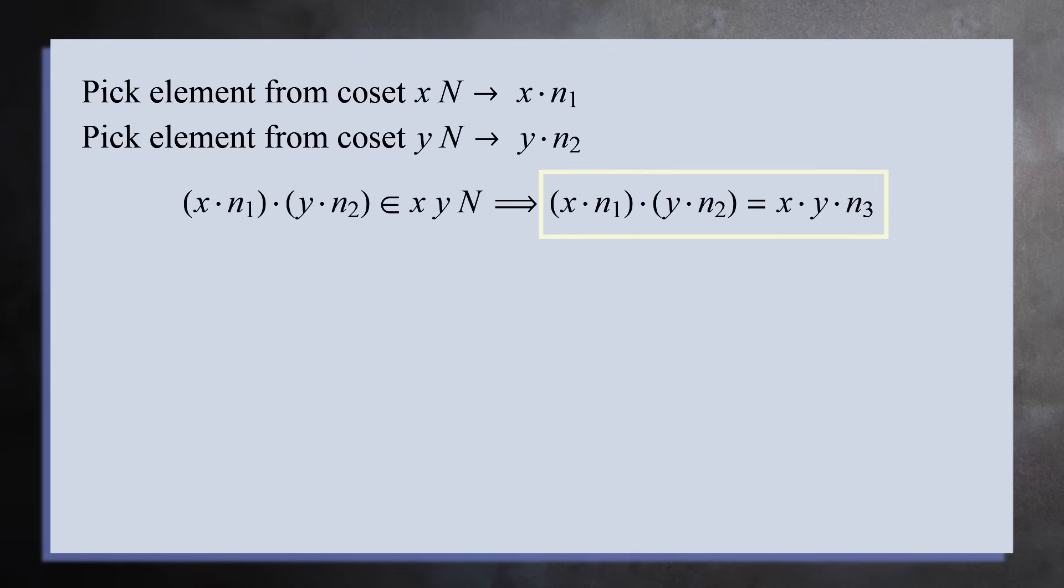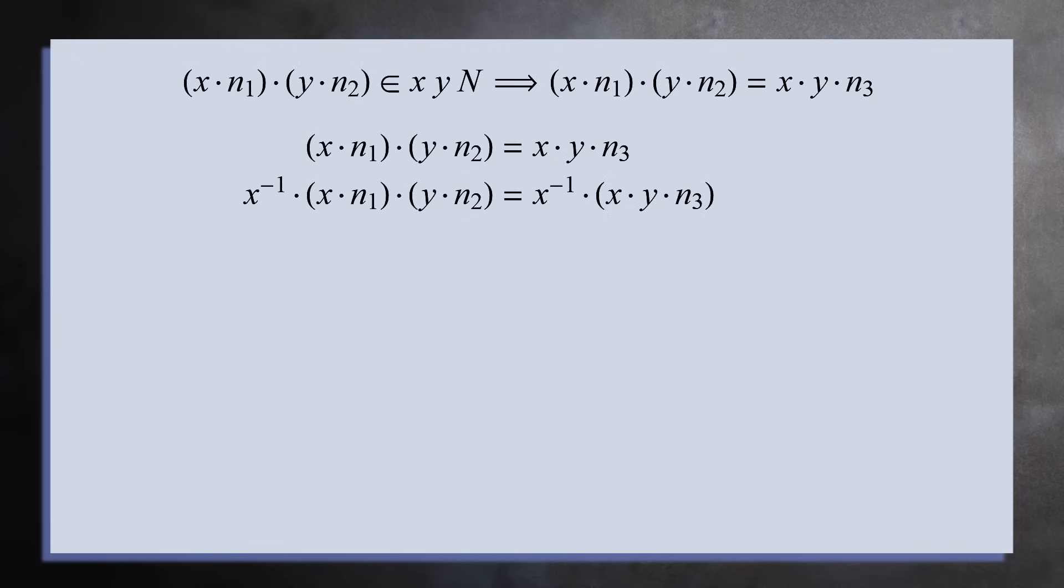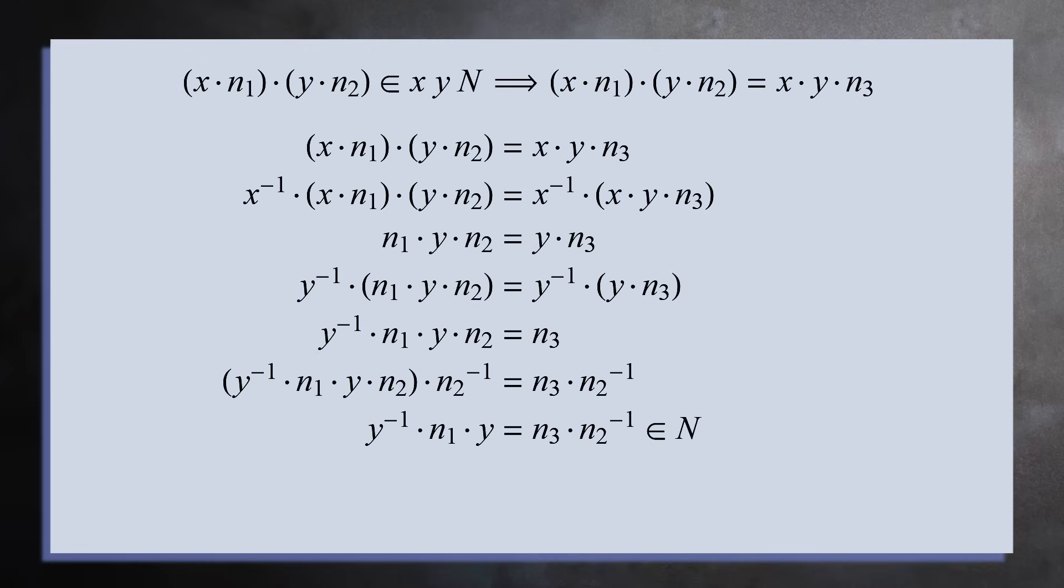We're now going to tinker with this equation to get a simpler expression. We can simplify this by multiplying on the left-hand side by the inverse of x and cancelling. Next, multiply on the left by y inverse and cancel on the right. Finally, multiply this on the right by n2 inverse. Since N is a subgroup, the product on the right is also an N. So we end up with y inverse times n1 times y is an element of N.